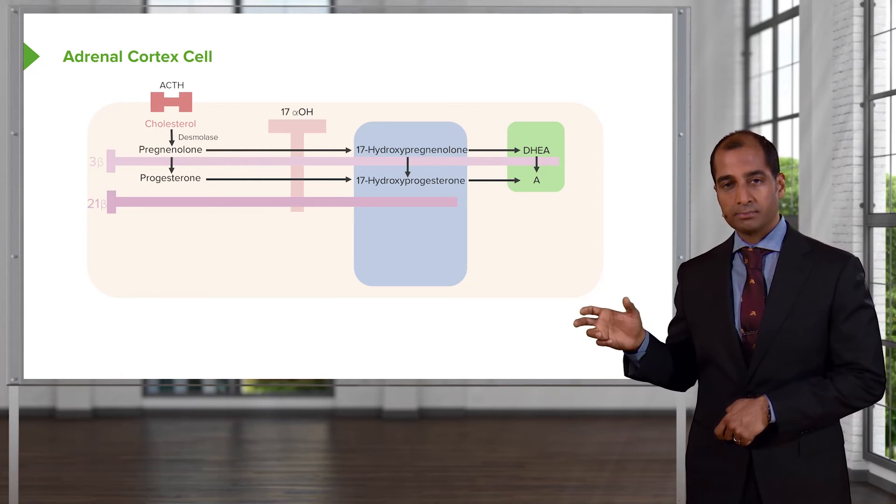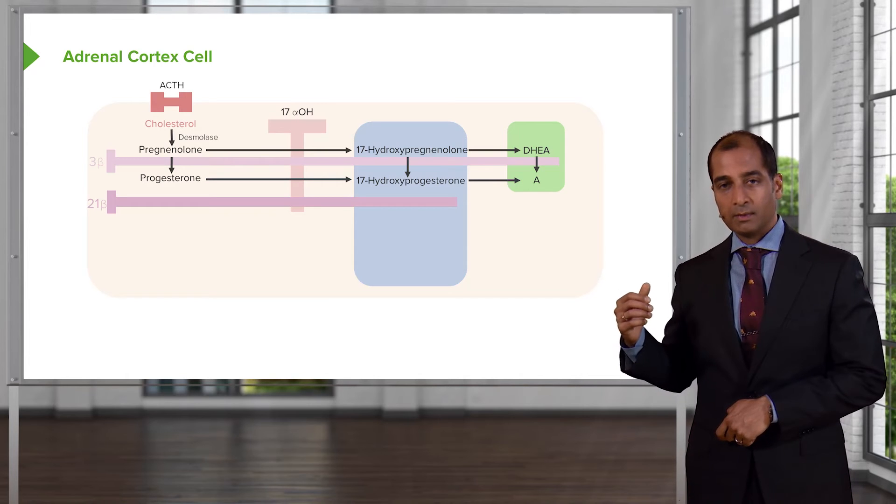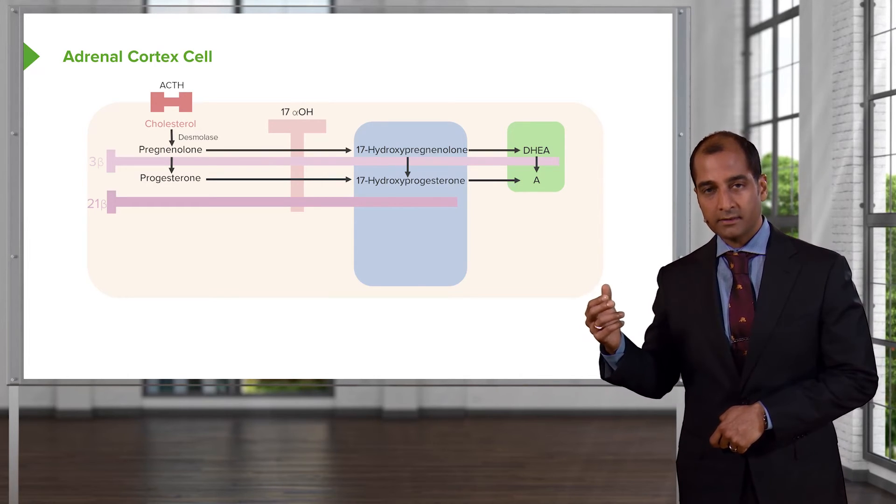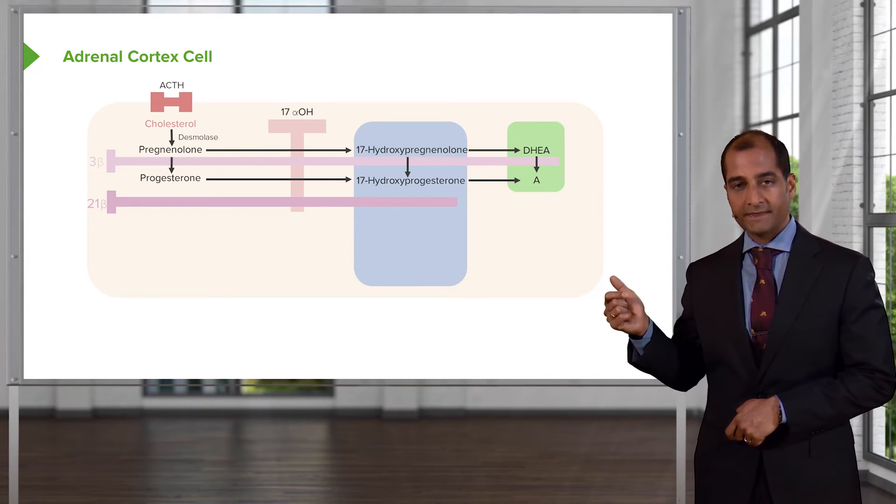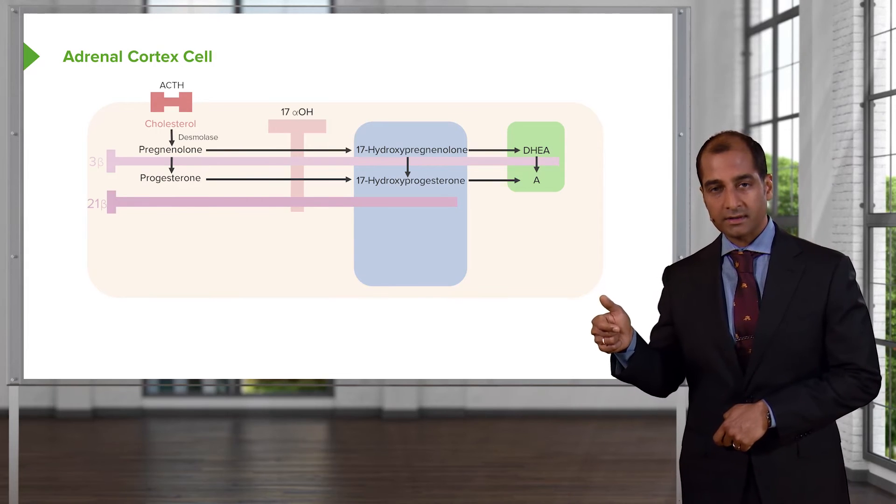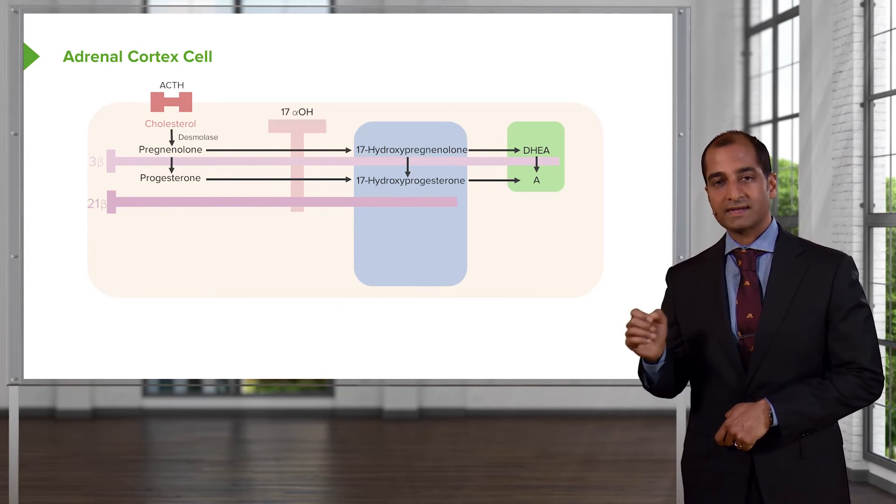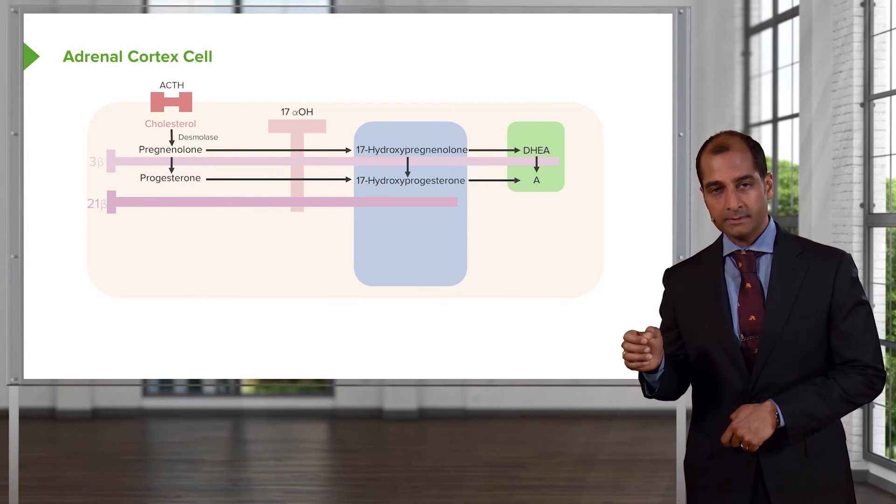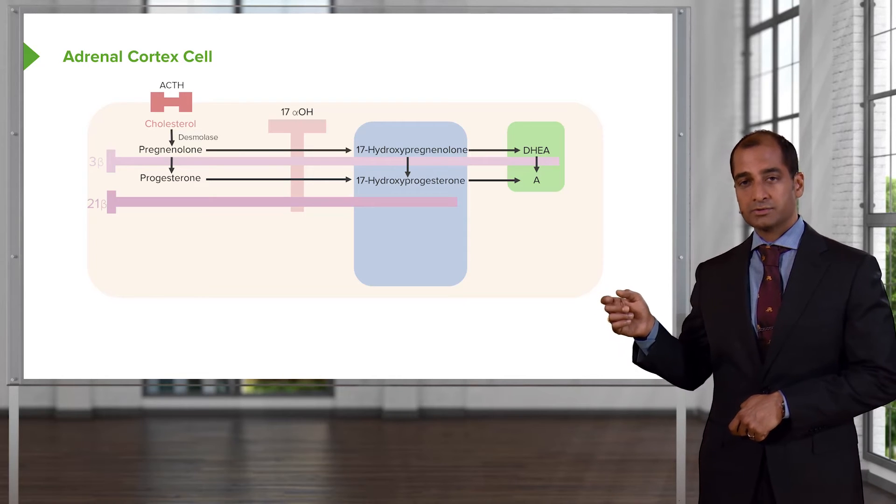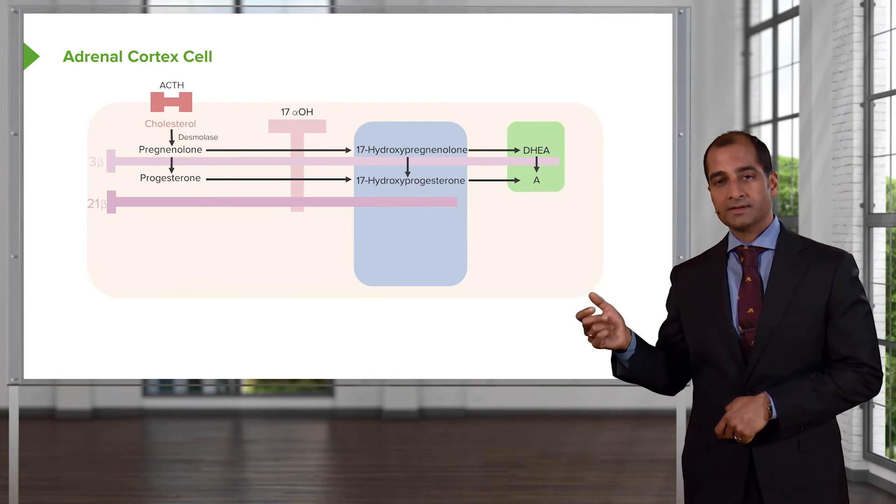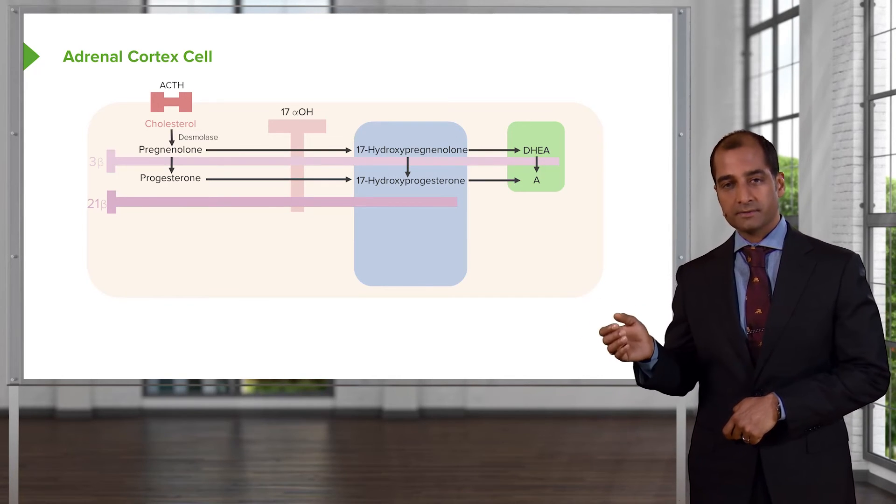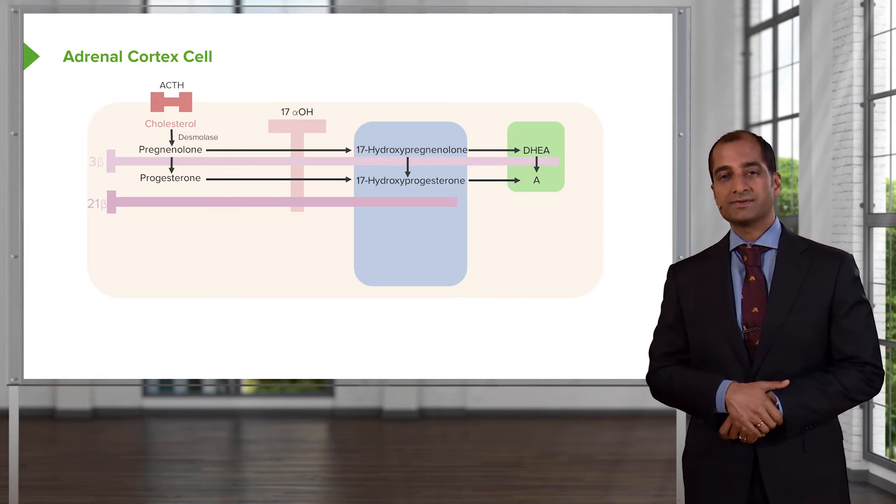Next, I want you to go in the blue box. That's your fasciculata. We were at hydroxypregnenolone. Identify that. With the help of the enzyme 3-beta-hydroxysteroid dehydrogenase, you convert it into 17-hydroxyprogesterone. And then finally, reticularis. I told you to focus upon the letter A, because that then to you means an androgen. The androgen here will be androstenedione.